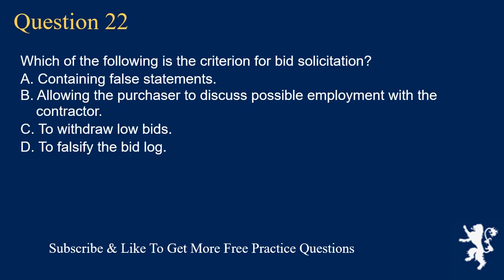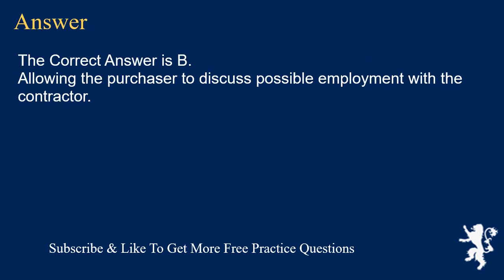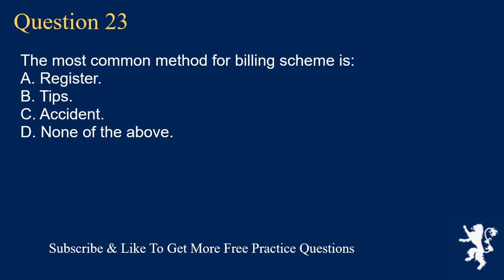Question 22: Which of the following is a criterion for bid solicitation? A. Containing false statements. B. Allowing the purchaser to discuss possible employment with the contractor. C. To withdraw low bids. D. To falsify the bid log. The correct answer is B. Allowing the purchaser to discuss possible employment with the contractor.